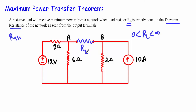The question is: what should be the value of RL for it to receive maximum power from this voltage source and current source? The theorem that answers this question is the Maximum Power Transfer Theorem. The load resistor is connected across terminals A and B, so A and B are our output terminals.